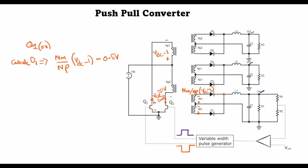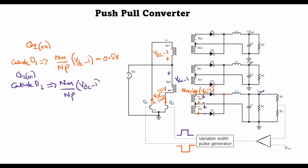Now when Q2 is turned on, a voltage of polarity VDC minus one is applied, and this time the dotted terminal of the half-primary is positive with respect to the undotted terminal. On the secondary side of the master winding the voltage polarity is reversed. In this case D1 will be reverse biased but D2 will be forward biased, and at the cathode of D2 when Q2 is turned on we will again have the same voltage: Nm/Np times (VDC minus one), minus the drop across diode D2.